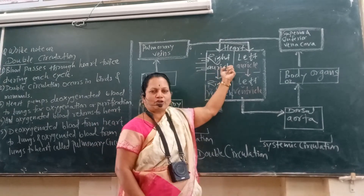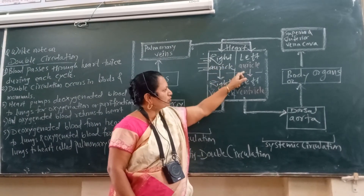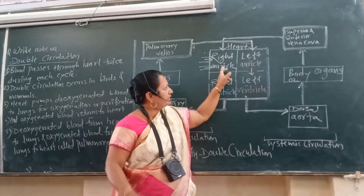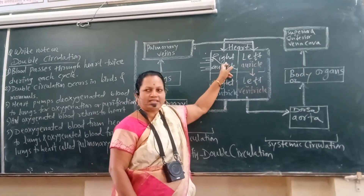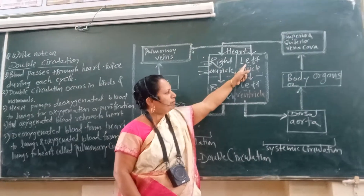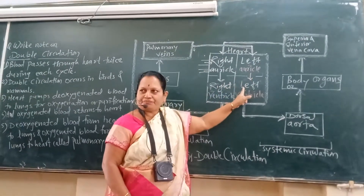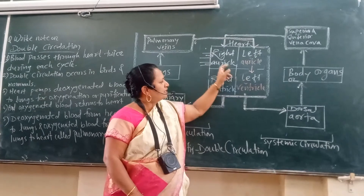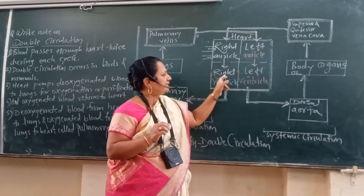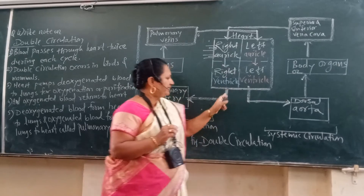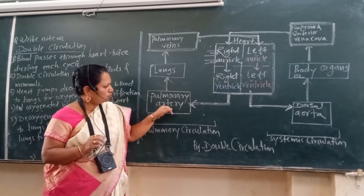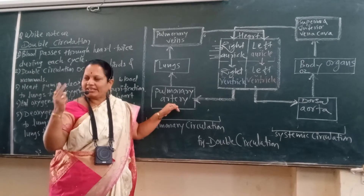When both auricles contract, blood from both auricles enters into both ventricles. Impure blood from the right auricle enters into the right ventricle, and pure blood from the left auricle enters into the left ventricle. This impure blood from the right ventricle is then transported to the lungs.